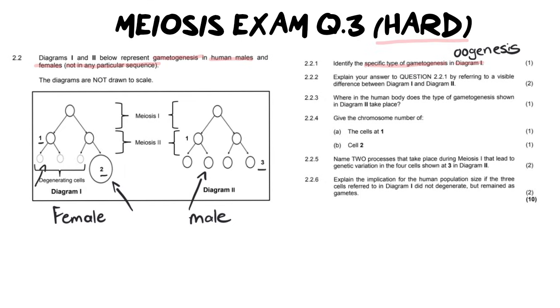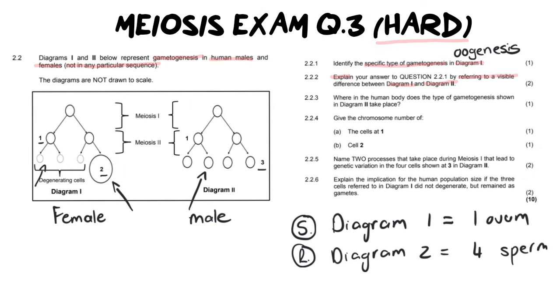Number two: explain your answer given in 2.2.1 by referring to the visible difference between diagram one and diagram two. Please remember when doing an explain question you always provide a statement with a reason. In giving our statement we are going to say that in diagram one there is only one ovum produced versus our reasoning for diagram two knowing that that is male is that we have four sperm cells. The statement could also be written as at the end of oogenesis we produce only one ovum with three polar bodies whereas in diagram two there are four evenly sized cells which represent sperm cells.